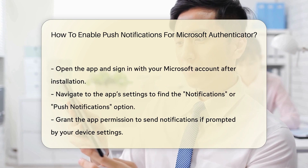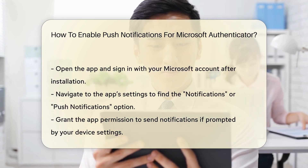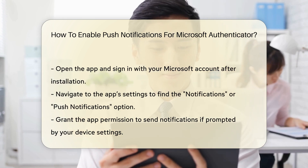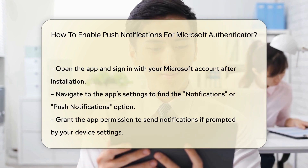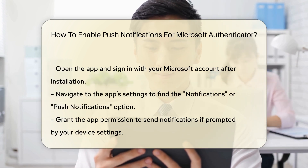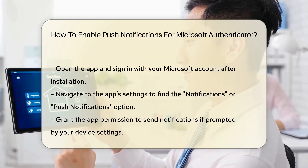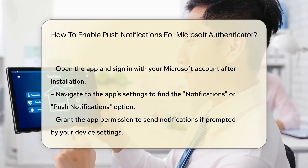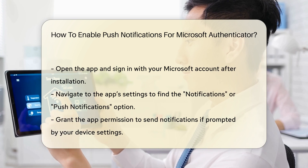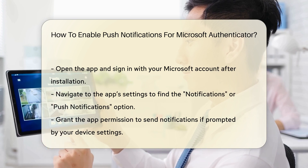Next, navigate to the settings within the app. Look for the option labeled Notifications or Push Notifications. Depending on your device settings, you may need to grant the app permission to send notifications. This step is crucial — otherwise, you will not receive alerts.